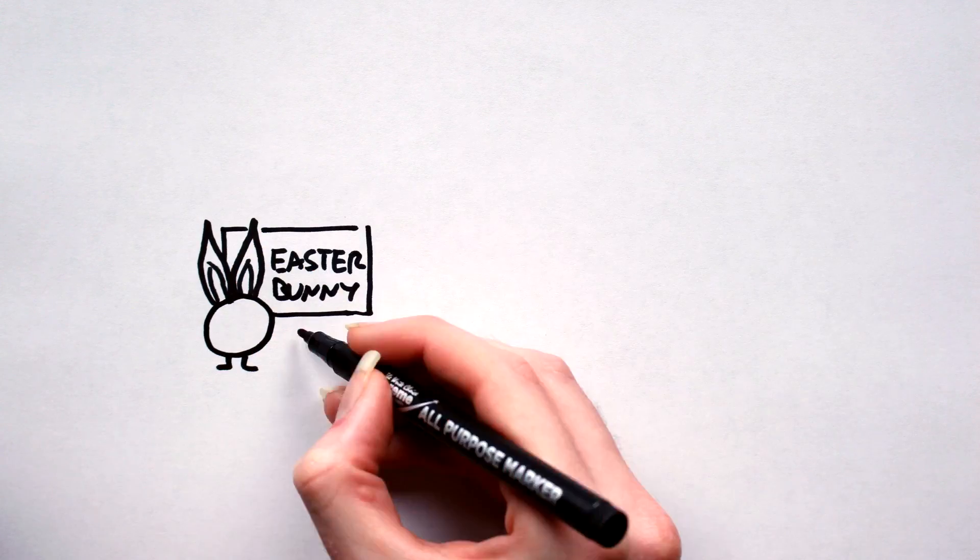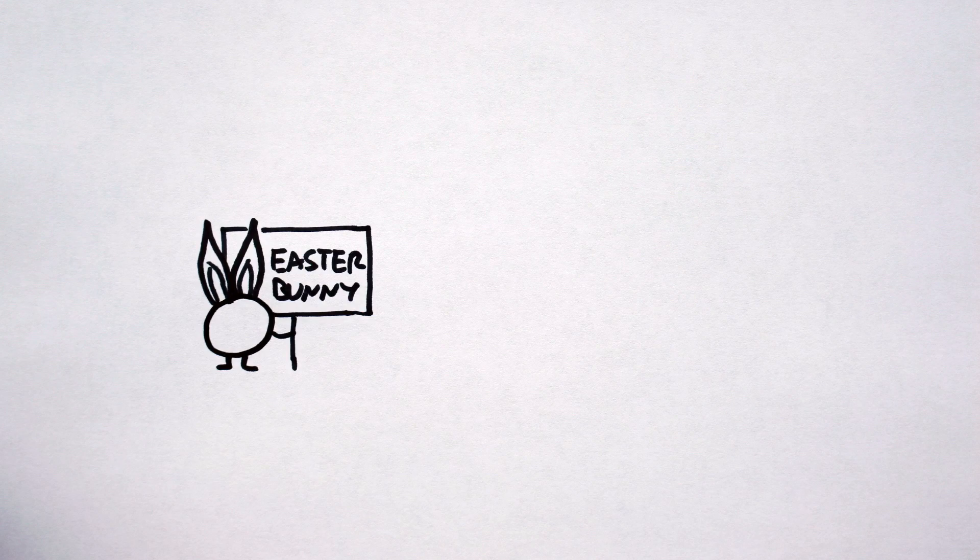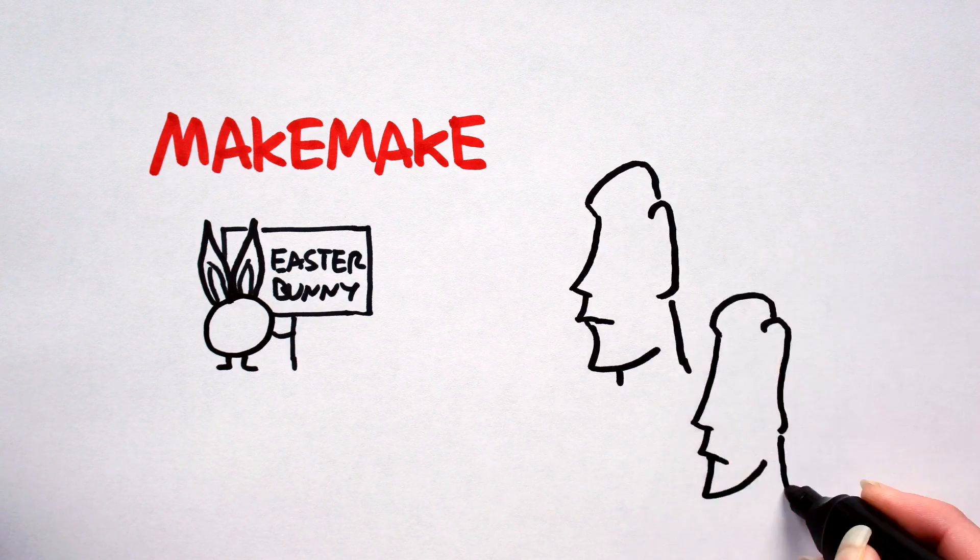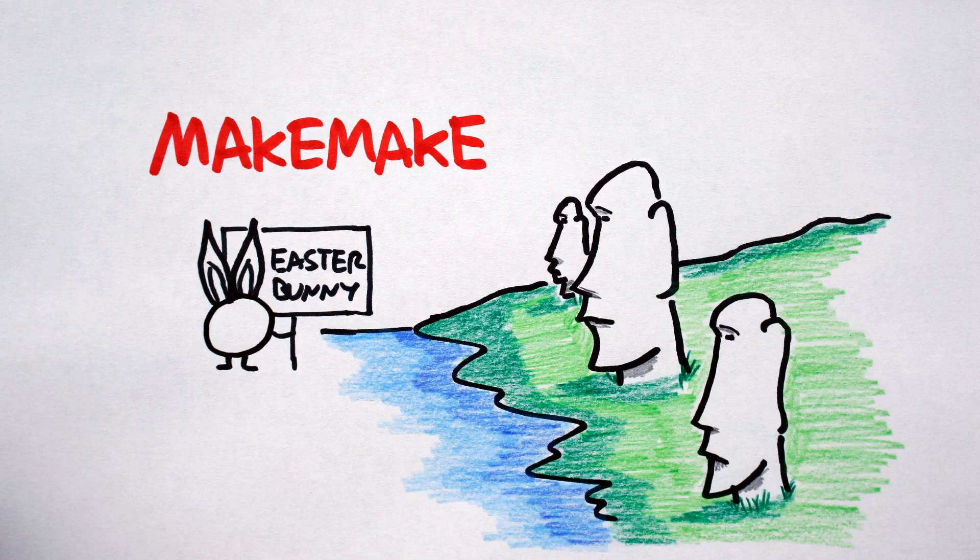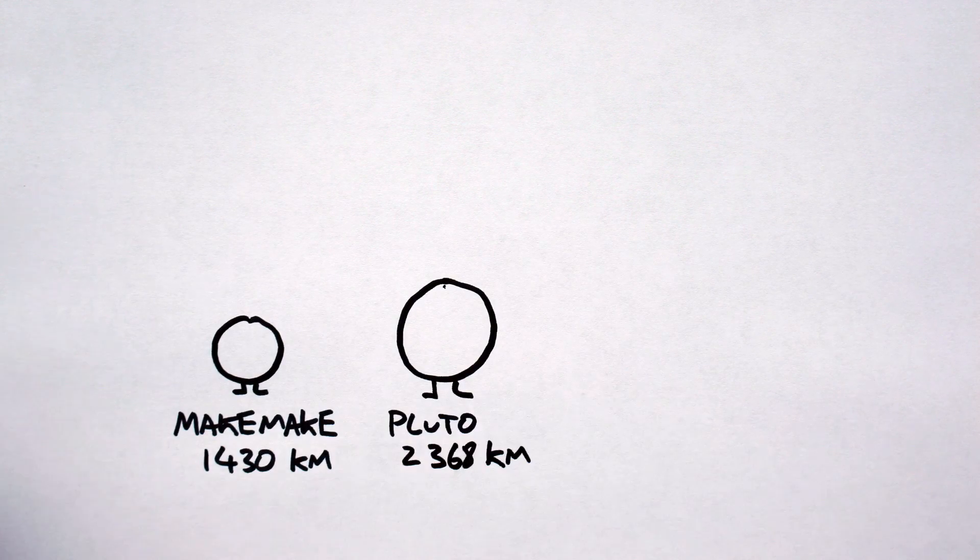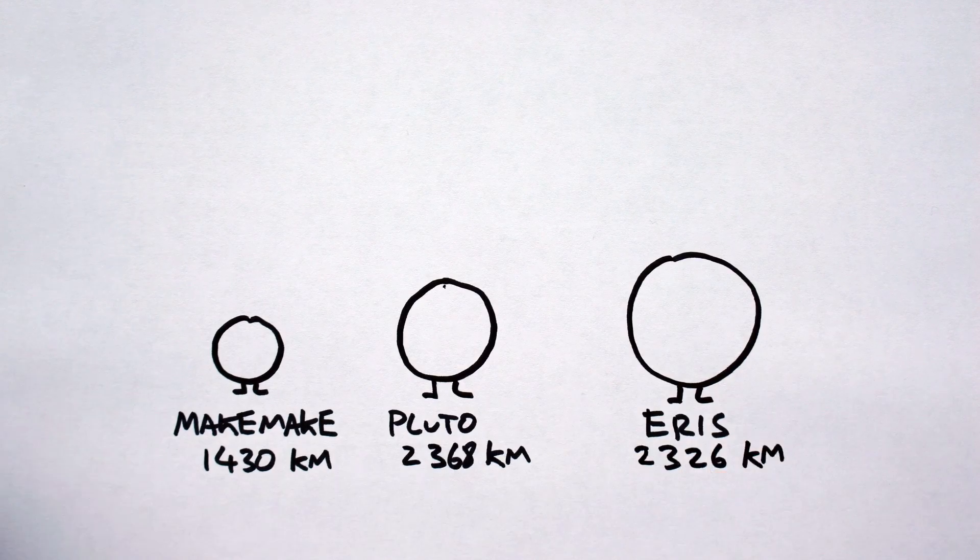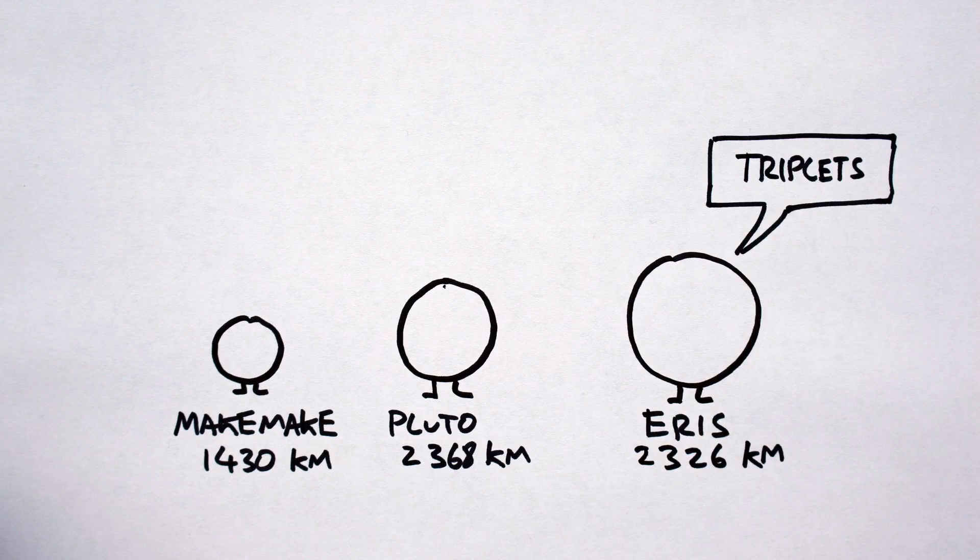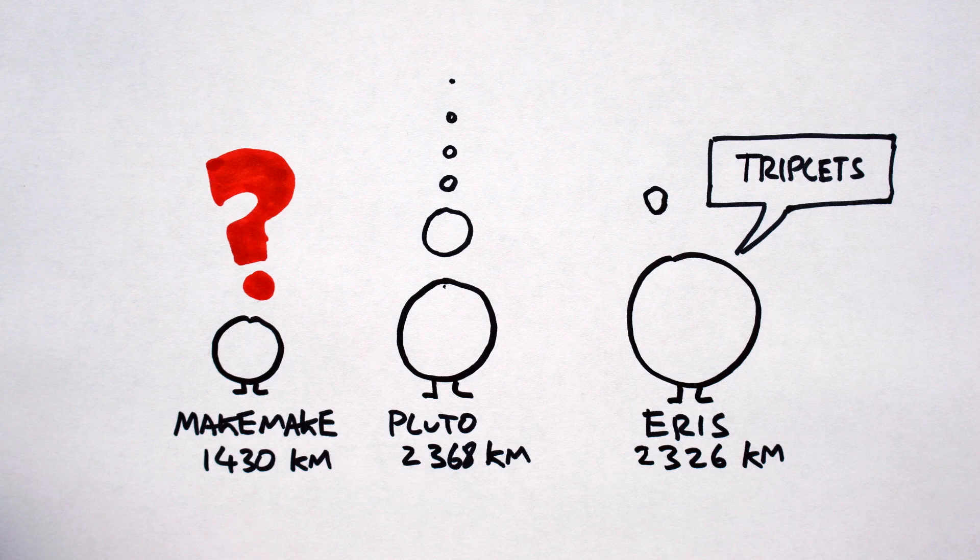Makemake, on the other hand, was discovered around Easter, and thus became known as the Easter Bunny. The connection to Easter was maintained with the name Makemake, taken from the mythology of the Rapa Nui people of Easter Island. At about two-thirds the size of Pluto, it has many things in common with both Pluto and Eris, with the three sometimes being referred to as triplets. Makemake's lack of a moon, however, does make it unique amongst the larger Kuiper Belt objects.